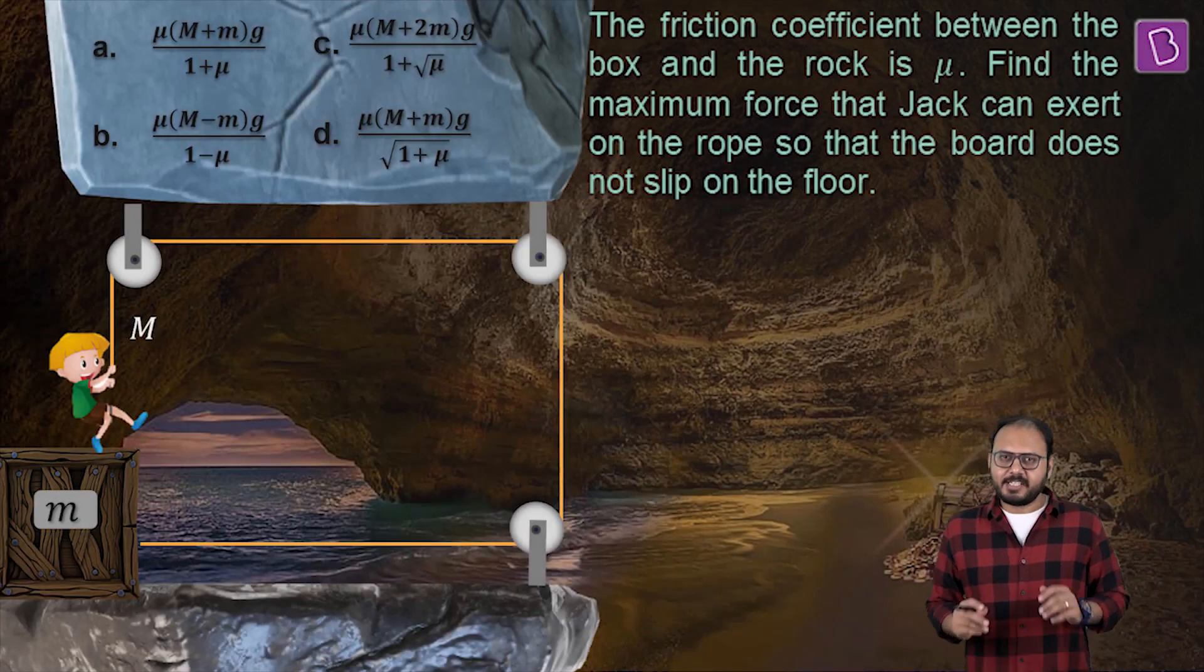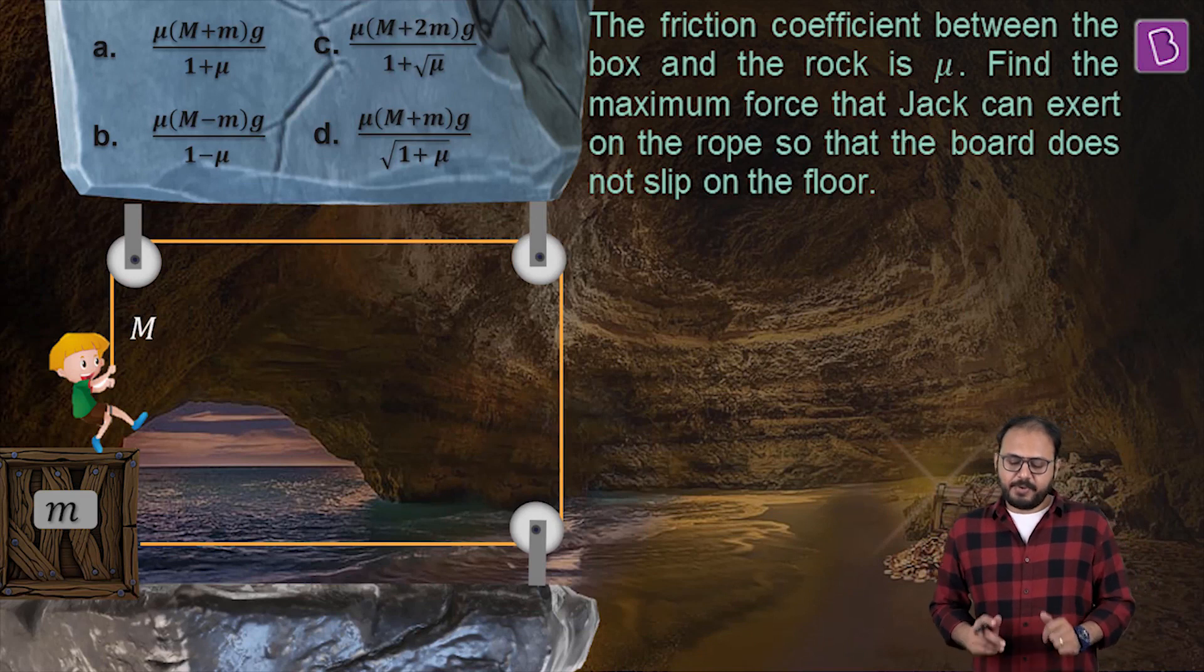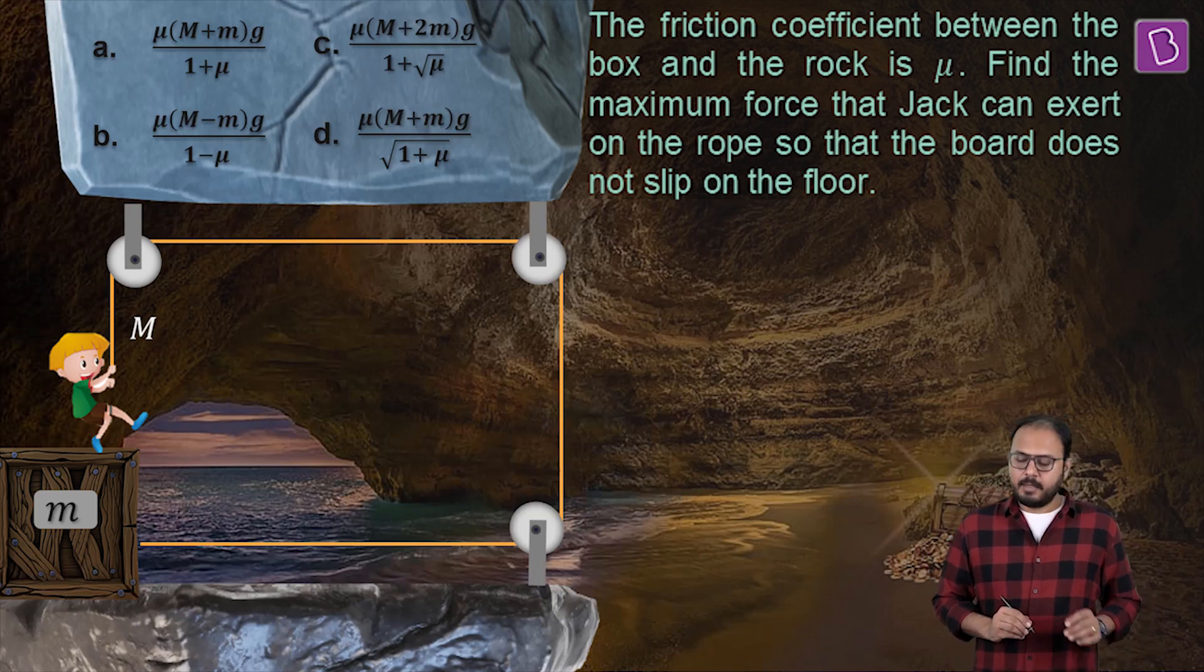On your screen is little Jack of the jungle. The question is: the friction coefficient between the box or crate on which Jack is standing and the rock below is μ. Find the maximum force that Jack can exert on the rope so that the box does not slip on the floor.